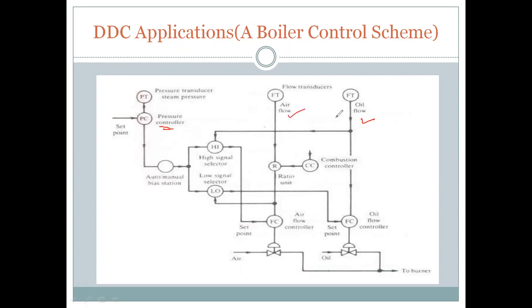Keeping the pollution control regulations in mind, a ratio of air flow and oil flow — air and fuel — is required. The steam pressure controller system will generate one actuation signal.